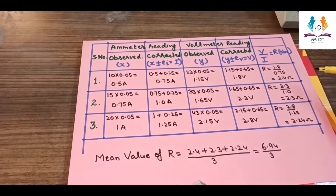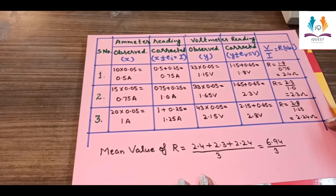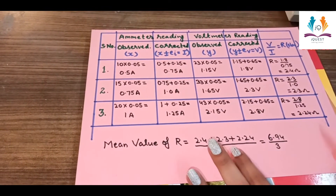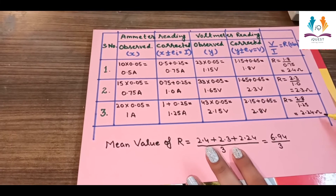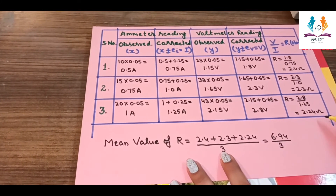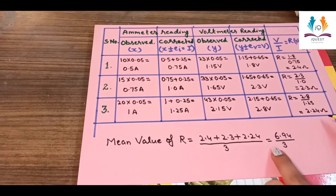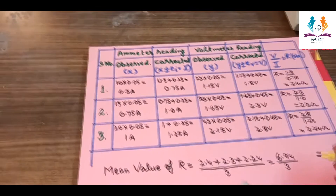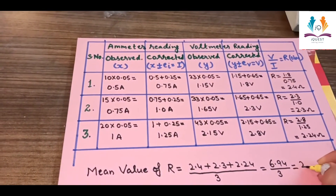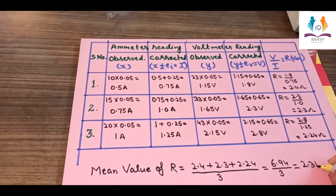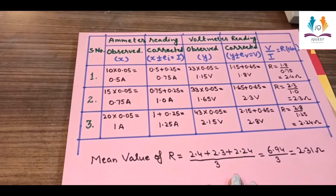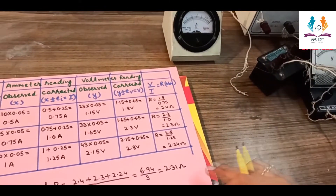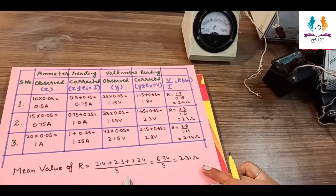Now we find the mean value of R from these three readings: 2.4 plus 2.3 plus 2.24 divided by 3 equals 6.94 upon 3, which equals 2.31 ohms. This is the value of the unknown resistance in our experiment.